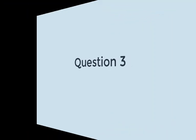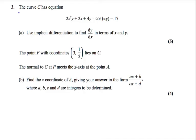Question 3. The curve C has equation 2x squared y plus 2x plus 4y minus cos(πy) equals 17. Part A says: use implicit differentiation to find dy/dx in terms of x and y.